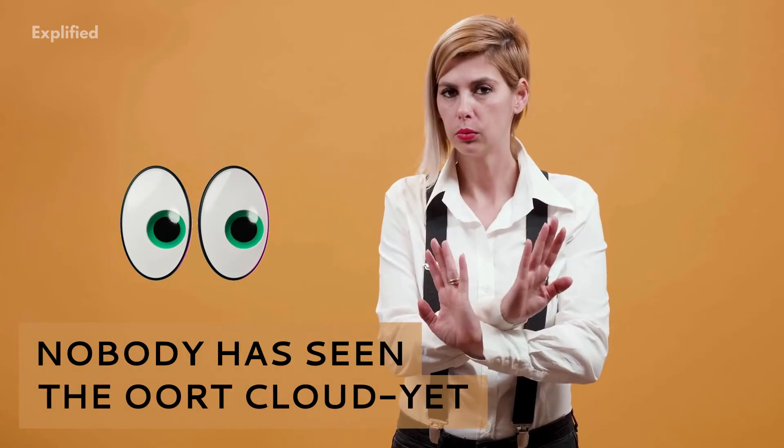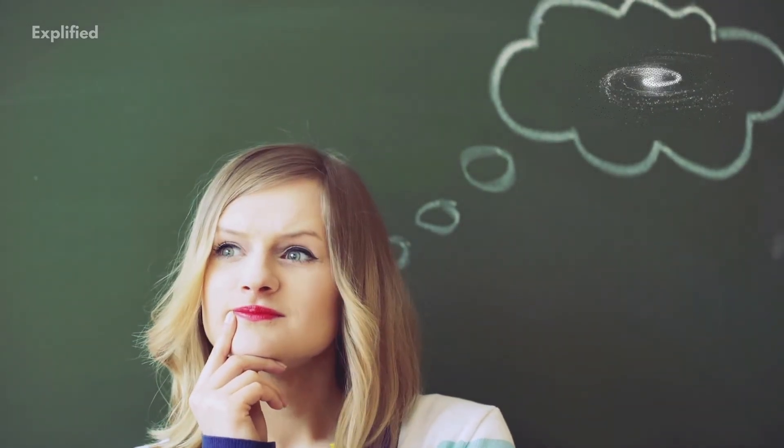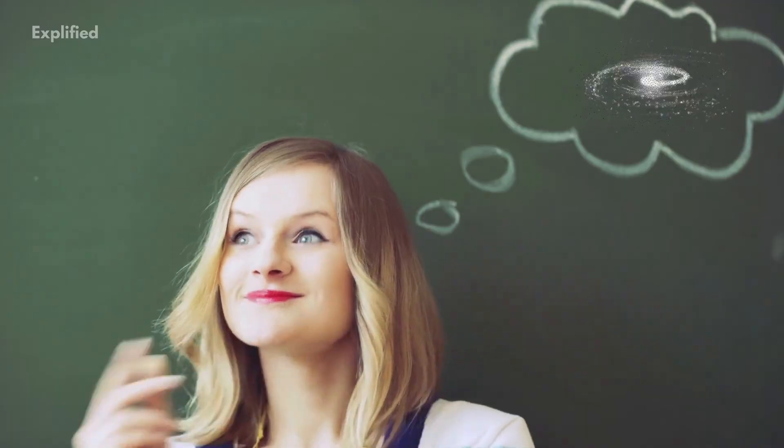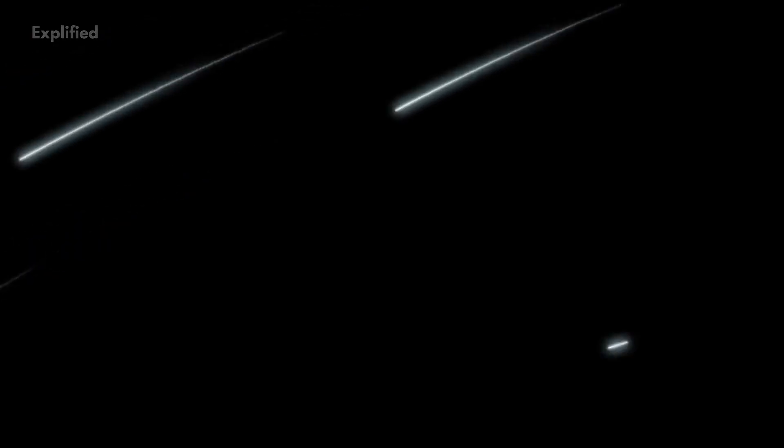Number 10. Nobody has seen the Oort cloud yet. Everything that is known about the Oort cloud is based on inference, reasoning, theoretical computer models, and some intelligent guesses about the origin of long-period comets, since nobody has actually observed the cloud yet.